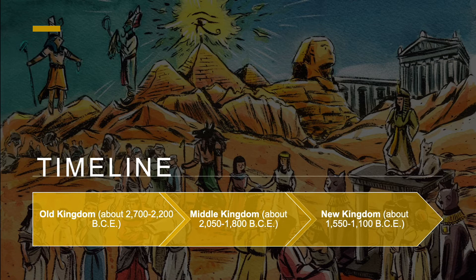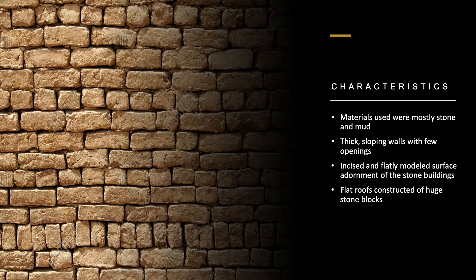First, we're going to learn about the characteristics before analyzing each monument. The two principal building materials used in ancient Egyptian architecture were unbaked mud brick and stone. From the Old Kingdom onwards, stone was generally used for tombs — the eternal dwellings of the dead — and for temples — the eternal houses of the gods. The stone used was mainly limestone, and sometimes sandstone and granite. Brick was used for royal palaces, fortresses, and the walls of temple precincts and towns. Mud brick and stone are very durable materials, and religious architecture was meant to last so that religion could be passed on to future generations.